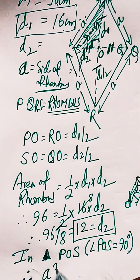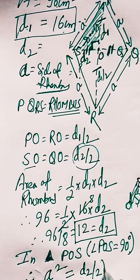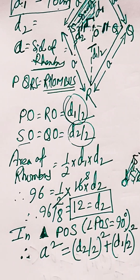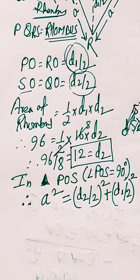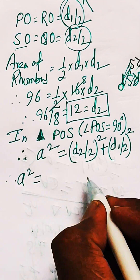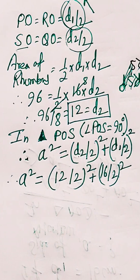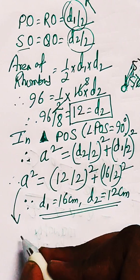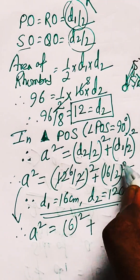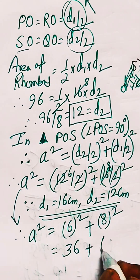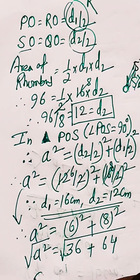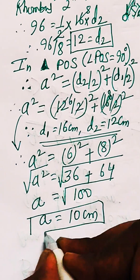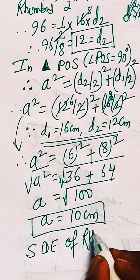Applying the Pythagorean theorem to the right triangle formed at O: A² = (d2/2)² + (d1/2)². Since d1 = 16 and d2 = 12, we get A² = (12/2)² + (16/2)² = 6² + 8² = 36 + 64 = 100. Taking the square root of both sides, A = √100 = 10 cm. This is the side of the rhombus.